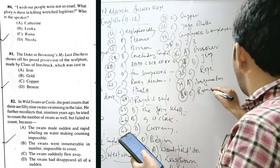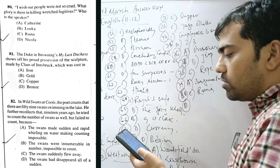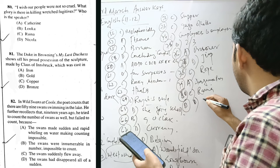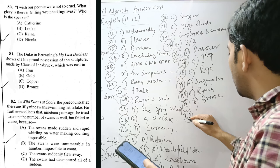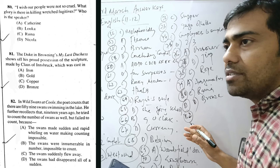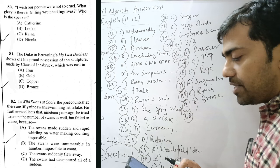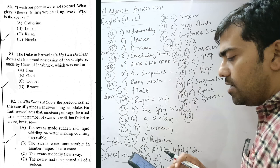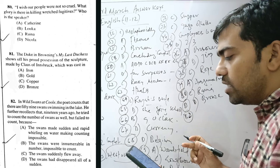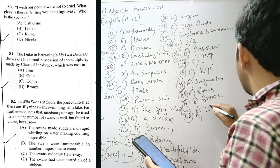Question 81. The Duke in Browning's My Last Duchess does a source of his proud possession of the sculpture made by Claus of Innsbruck, which was cast in bronze. These questions are very direct and very conceptual type. And one need to go through the line by line of the text in order to make the questions answers correct. In Wild Swans at Coole, the poet counts that there are 59 swans swimming in the lake. He further recollected that 19 years ago, he tried to count the number of swans but failed to count. Because the swans made sudden and rapid welding on water making counting impossible. Welding.